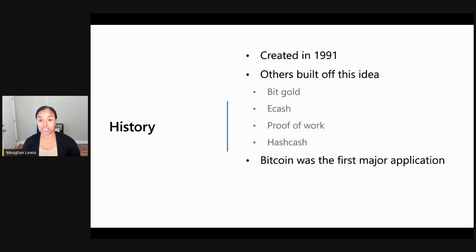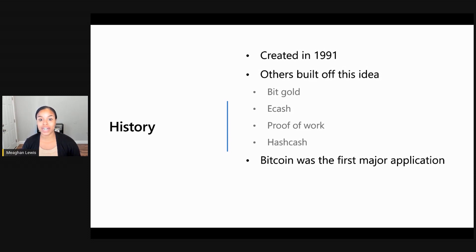Blockchain technology was created in 1991. It was created by two researchers and computer scientists who wanted a way to create a timestamp system that was reliable and cannot be tampered with. Others then built off this idea and explored a currency system that would allow transactions between parties in a secure way.